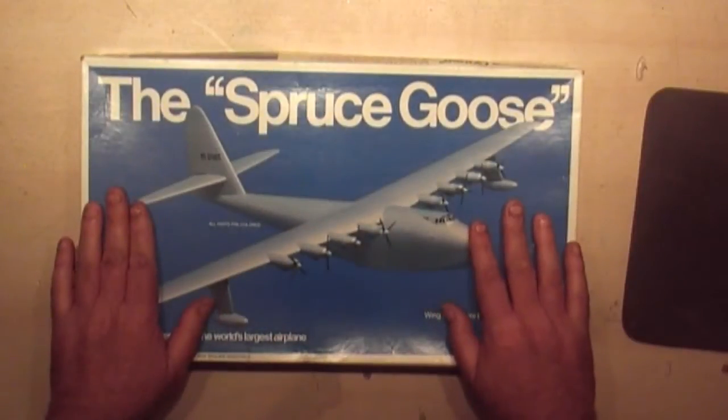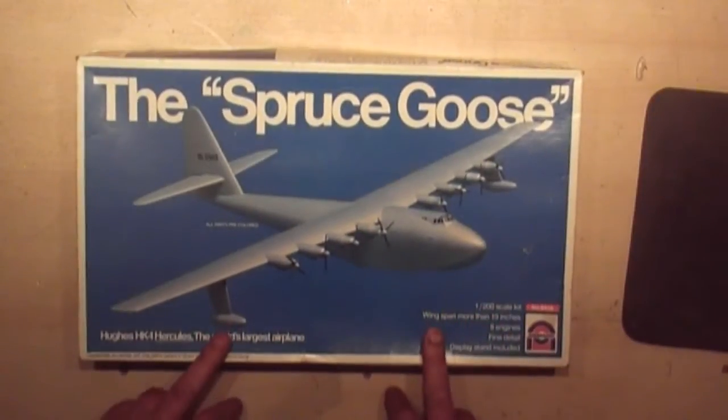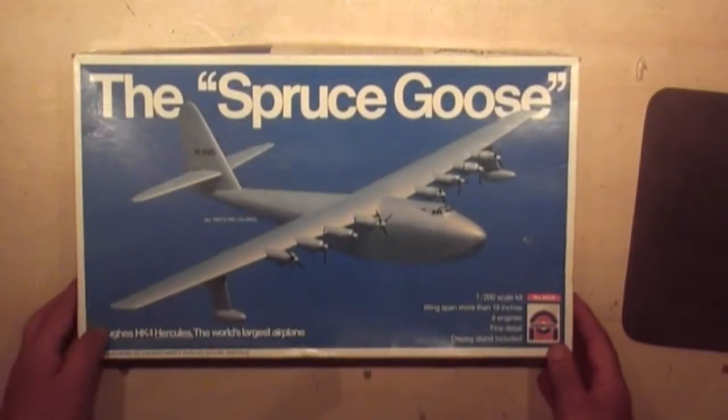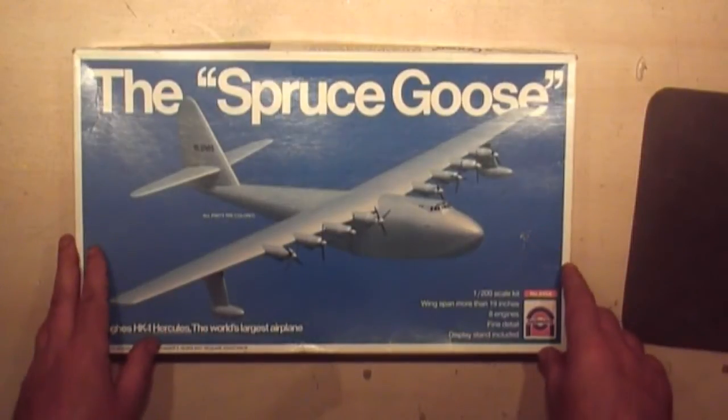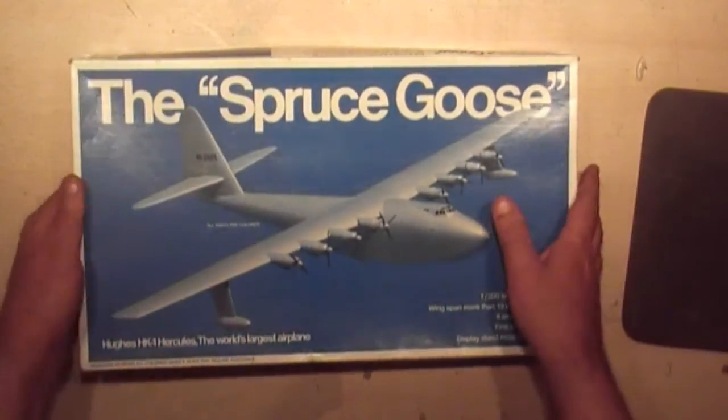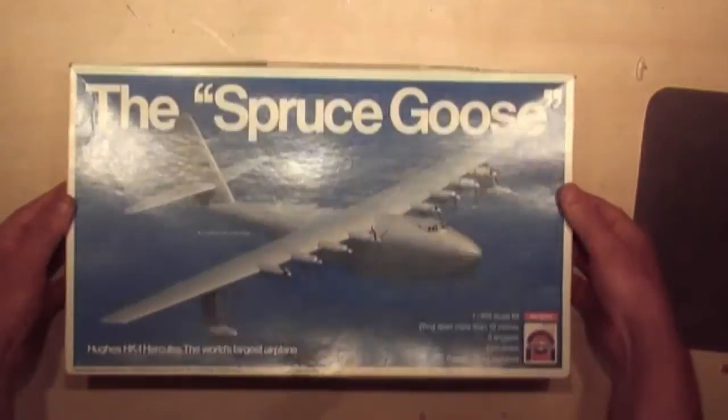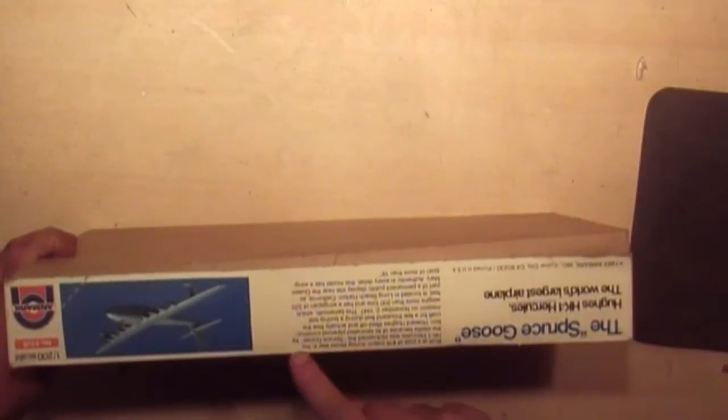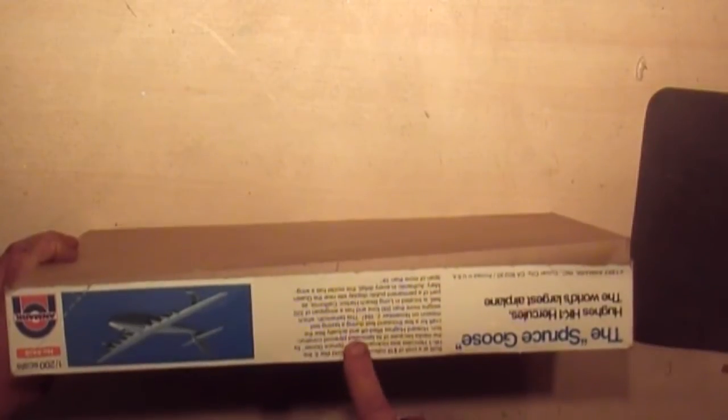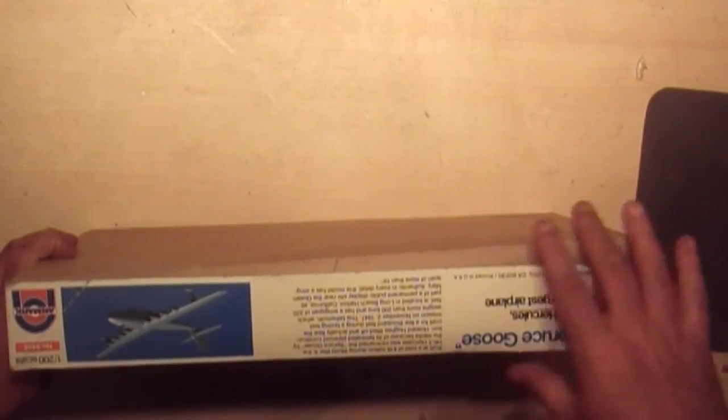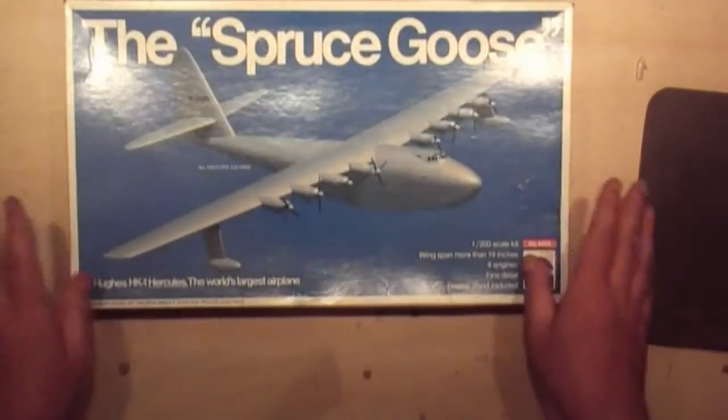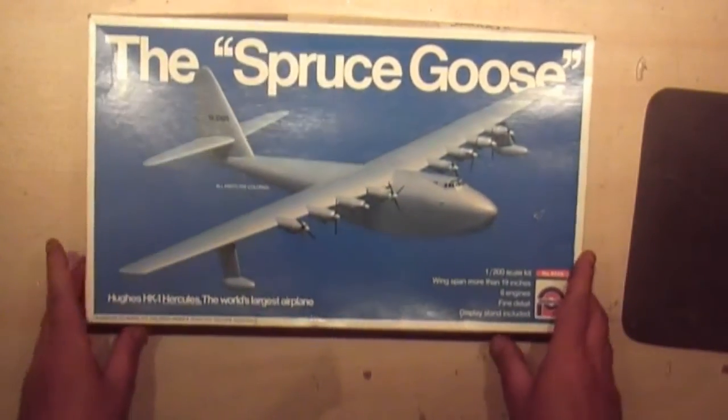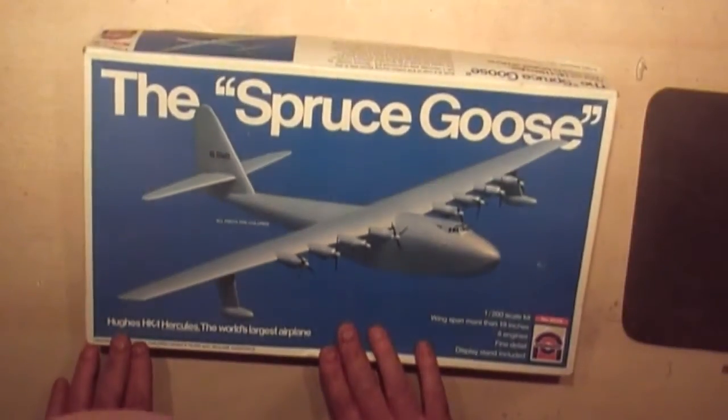Okay, review of the Spruce Goose HK-1 Hughes Hercules. The kit is Minicraft, I think that's how you pronounce it. There's not much to this kit. On the side of the box you've got the history of it. It cost 18 million dollars to build in 1947. On the other side, again the same thing.